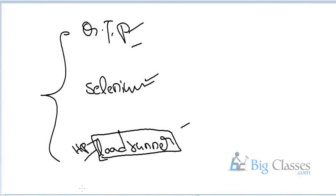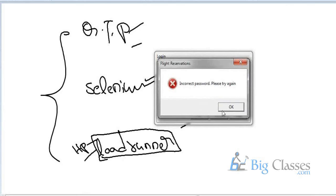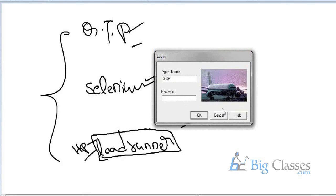What do we mean by correctness? For example, open a Gmail or flight application. I enter a valid agent name and valid password — we are checking whether it is working correctly or not. That is correctness. But with Load Runner, we are not checking correctness. We are only checking whether the output is coming fast or not — only the performance of the application.